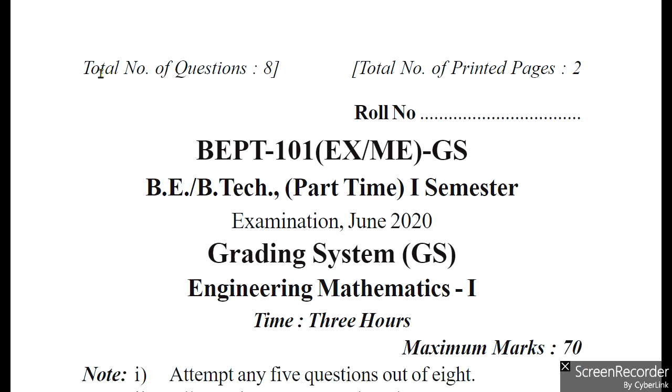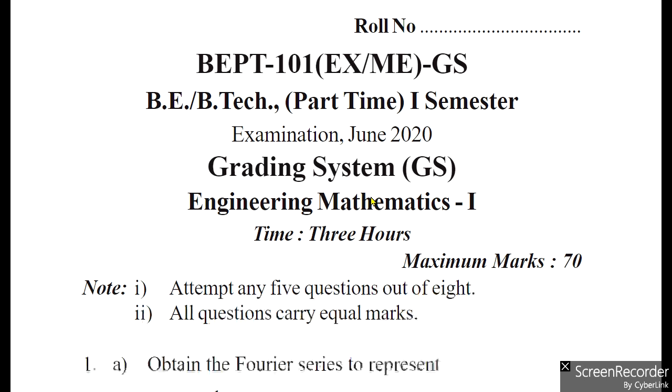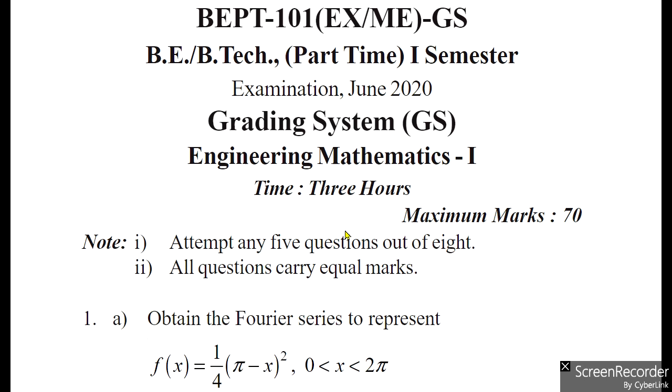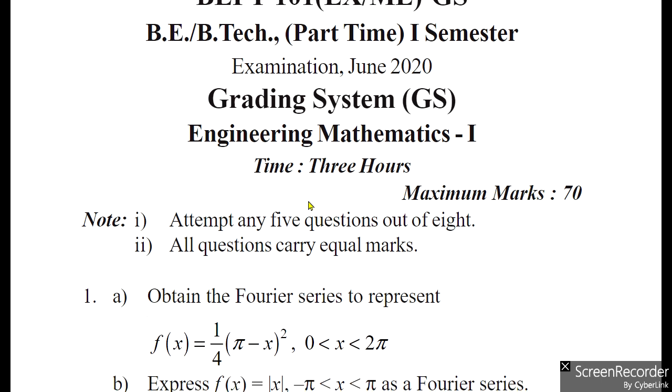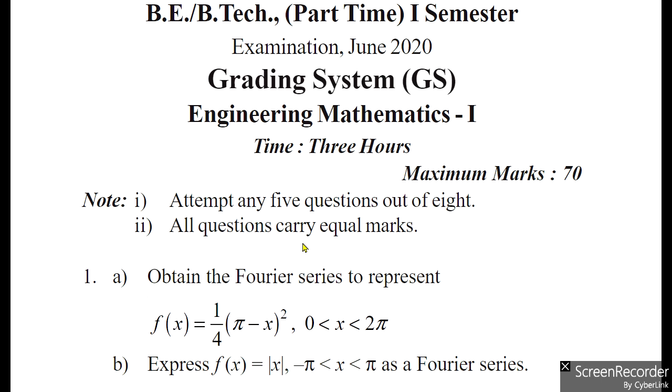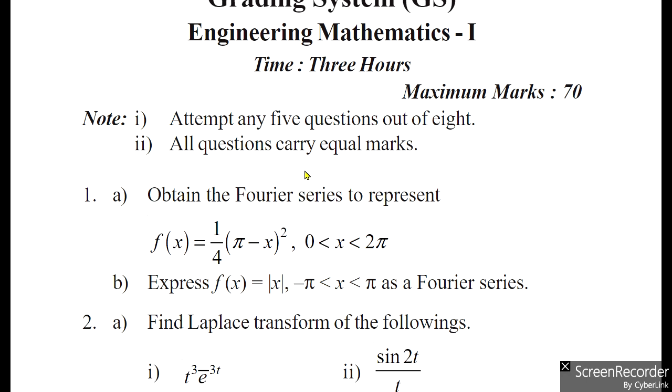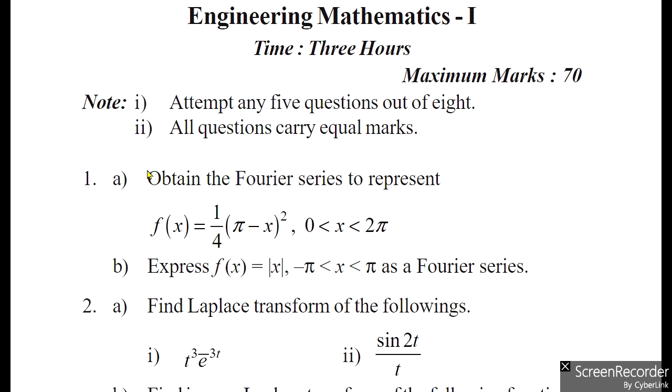Total number of questions here: 8. Total number of printed pages: 2. BEPT-101 subject code, B.E./B.Tech Part Time First Semester, Examination June 2020, subject Engineering Mathematics-1. Time is 3 hours, maximum marks 70. Note: Attempt any 5 questions out of 8. All questions carry equal marks.